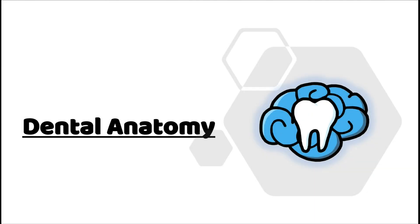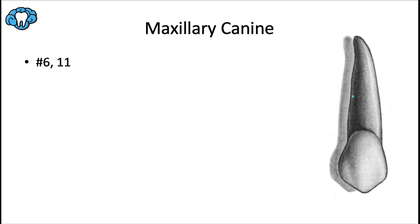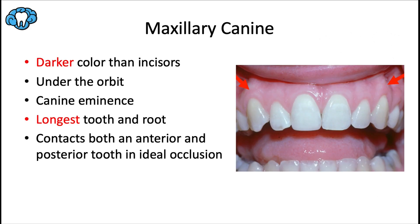Welcome back to our dental anatomy series. This video is going to be about the maxillary canine. Here we have the permanent maxillary canine — it's going to be the last succedaneous tooth to erupt into the arch at around 11 to 12 years of age. Using the universal tooth numbering system, this would include tooth number 6 and 11.